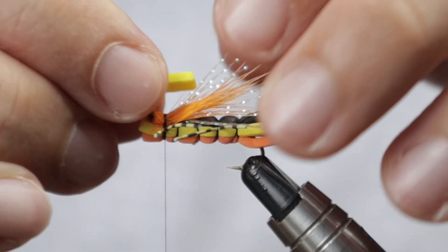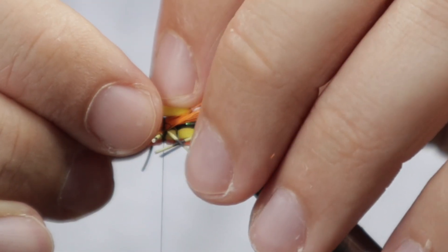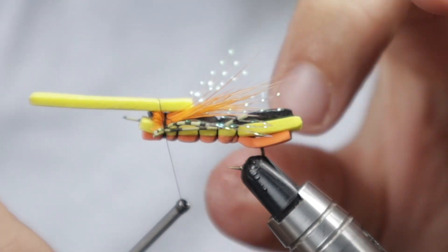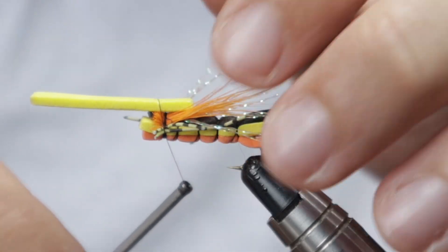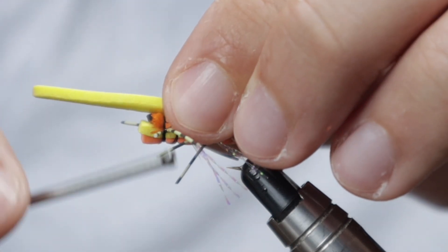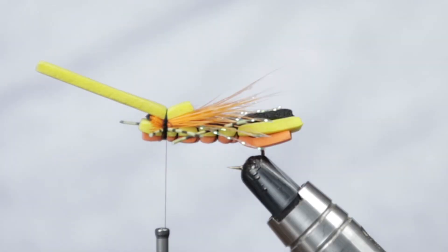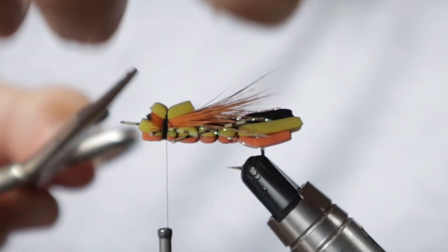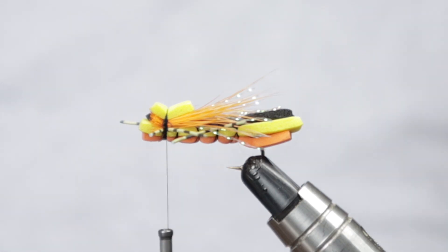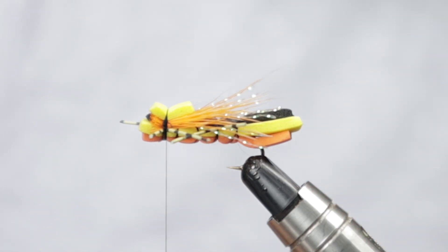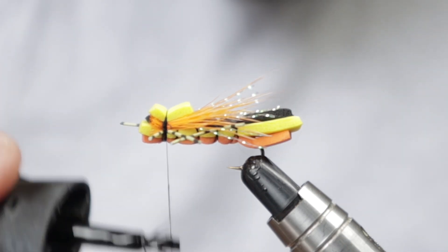The last thing to add in is just another little bit of foam, just on the top at the front. Then you can come in and trim this down. Come in at this point and get some super glue on your thread.